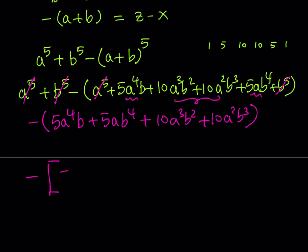I can take out a 5 a b, then I should be getting a cubed plus b cubed, and then plus, for this one, the common factor is going to be 10 a squared b squared, and then I should be getting a plus b.